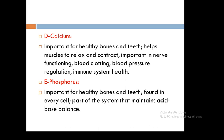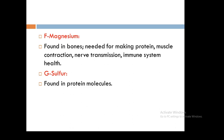Phosphorus is very important for healthy bones and teeth, found in every cell, and part of the system that maintains the acid-base balance. Phosphorus is found in meat, fish, chicken, eggs, milk, and processed foods.